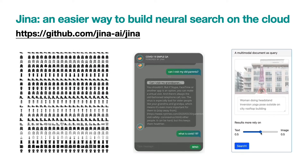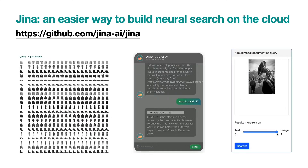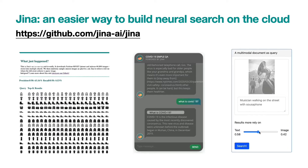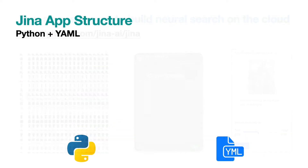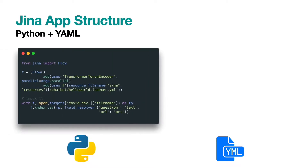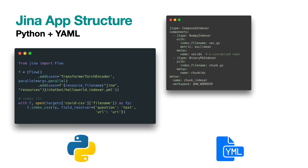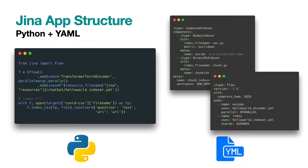If you have installed GINA, you may want to make sure it is the latest version by using pip install -u GINA. A typical GINA application contains two types of source files: Python code and YAML config. The Python file defines the entry point and the customized logics. The YAML configs define the flow composition and the configuration of each individual executor.